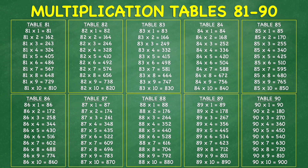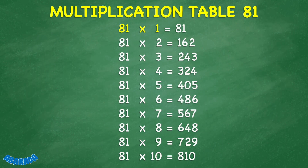Multiplication Tables 81 to 90. 81 times 1 equals 81. 81 times 2 equals 162. 81 times 3 equals 243. 81 times 4 equals 324. 81 times 5 equals 405. 81 times 6 equals 486. 81 times 7 equals 567.